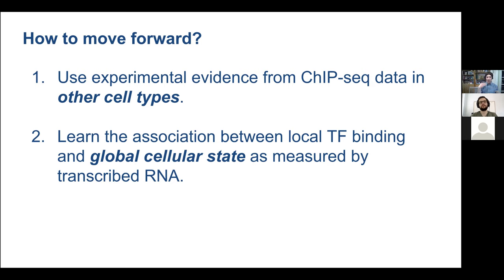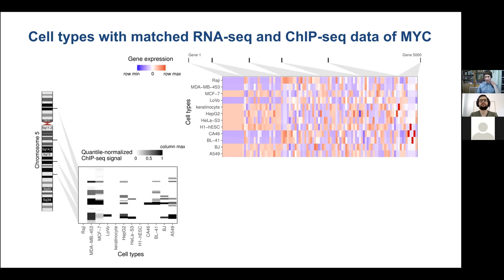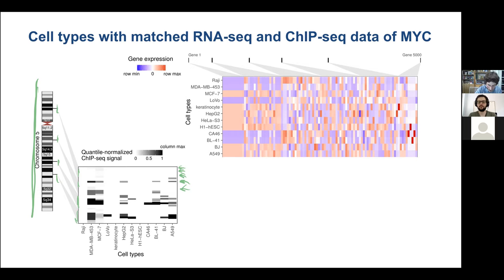The inspiration: if a transcription factor has zero expression in a cell type, you don't expect to find much ChIP-seq binding anywhere in that cell type. We build a big matrix for each of the ~30 million 100 base pair bins in the genome, looking at those 5,000 genes and computing whether there is a Pearson correlation across the nine cell types between expression of that gene and ChIP-seq signal in that window.